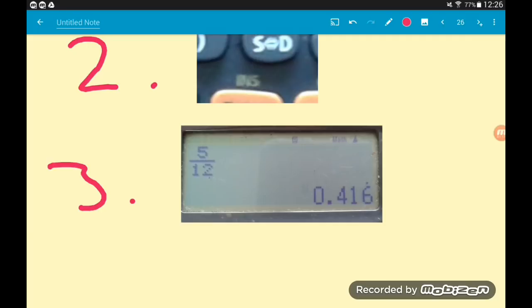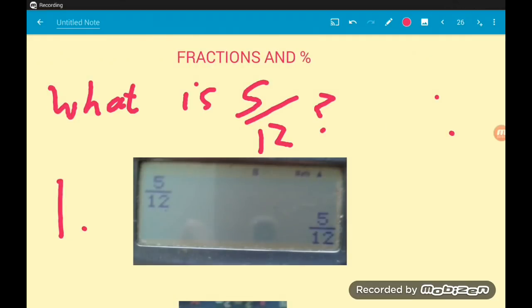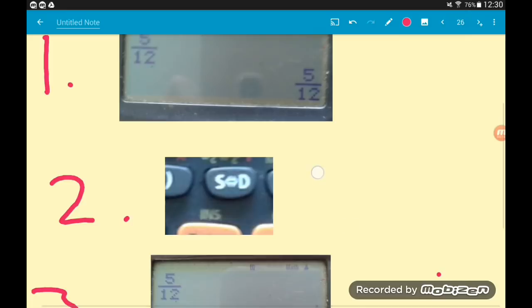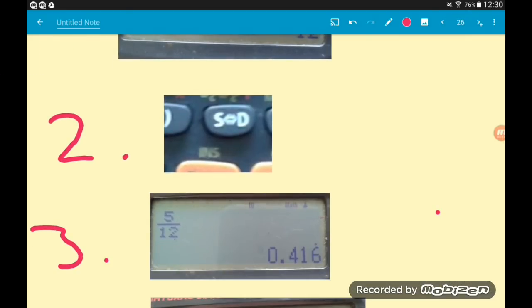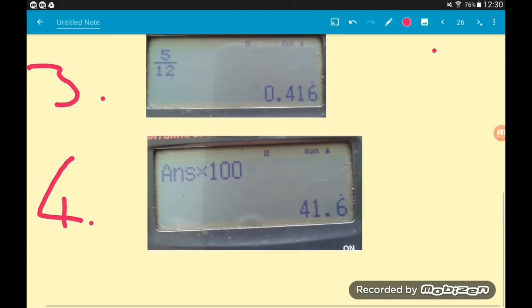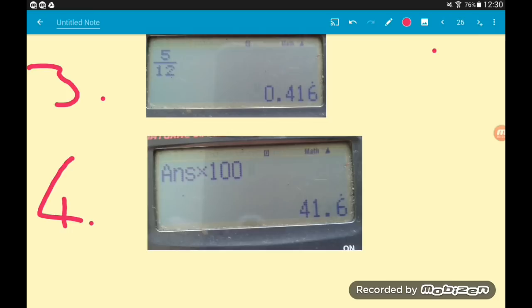This also works backwards: if you put a decimal in, press SD, it will turn it into a fraction in its simplest form. It's more likely though you're going to want to turn a fraction into a decimal or a percentage, which we can do next. Pretty much the same question but here let's say we want to turn 5 twelfths into a percentage. The first three steps are the same: put 5 twelfths in, press equals, press SD to get your decimal. Then to turn the decimal into a percentage, remember you multiply by 100.